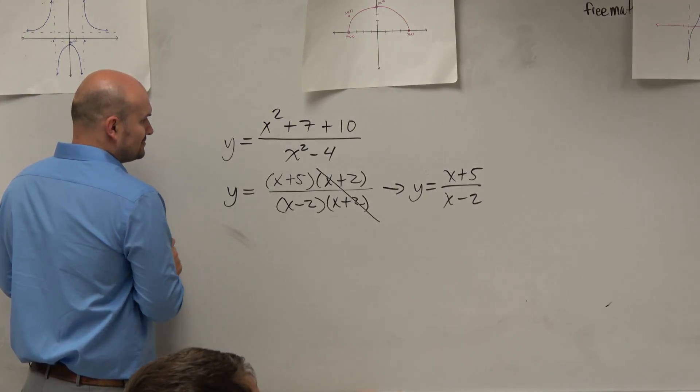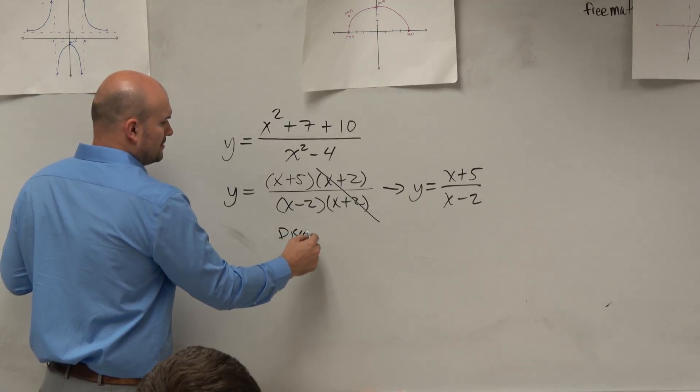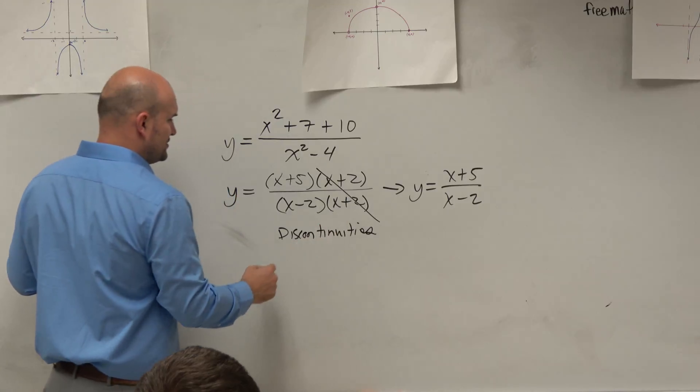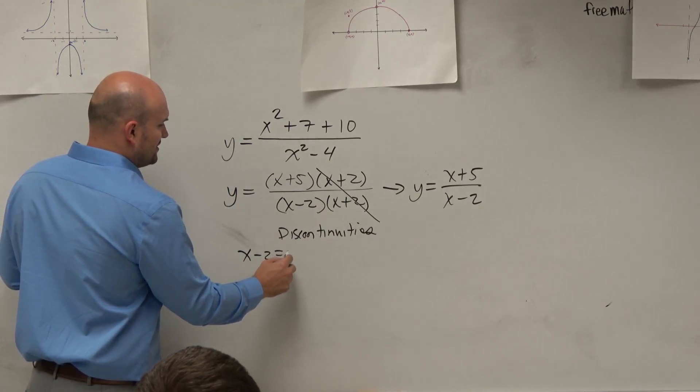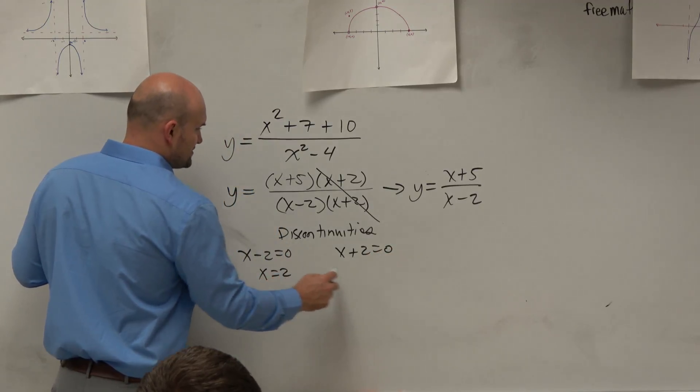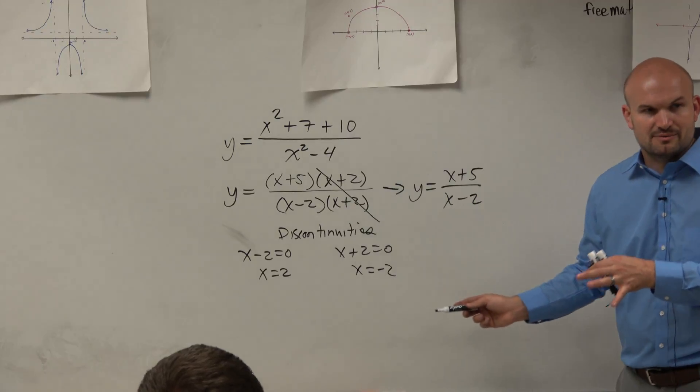Let's go and find the discontinuities. So we have two discontinuities. x minus 2 when x minus 2 equals 0 and when x plus 2 equals 0. Right? So at x equals 2 and at x equals negative 2. You guys agree, those are the two discontinuities that we discussed, right?